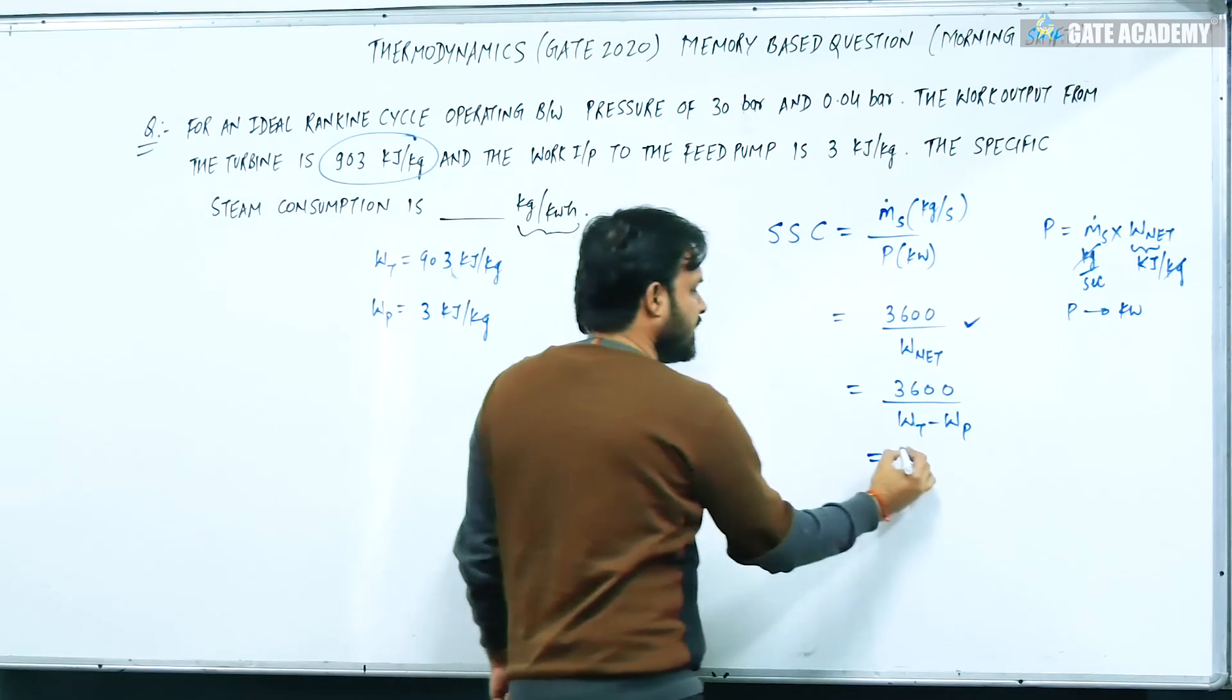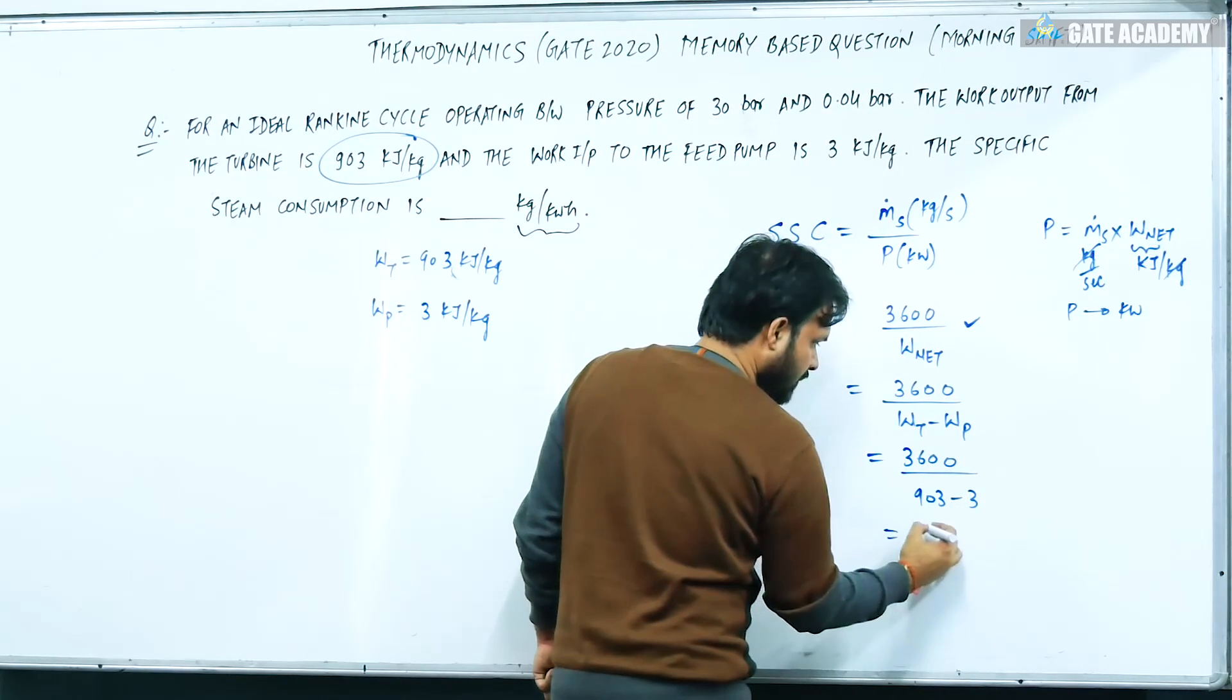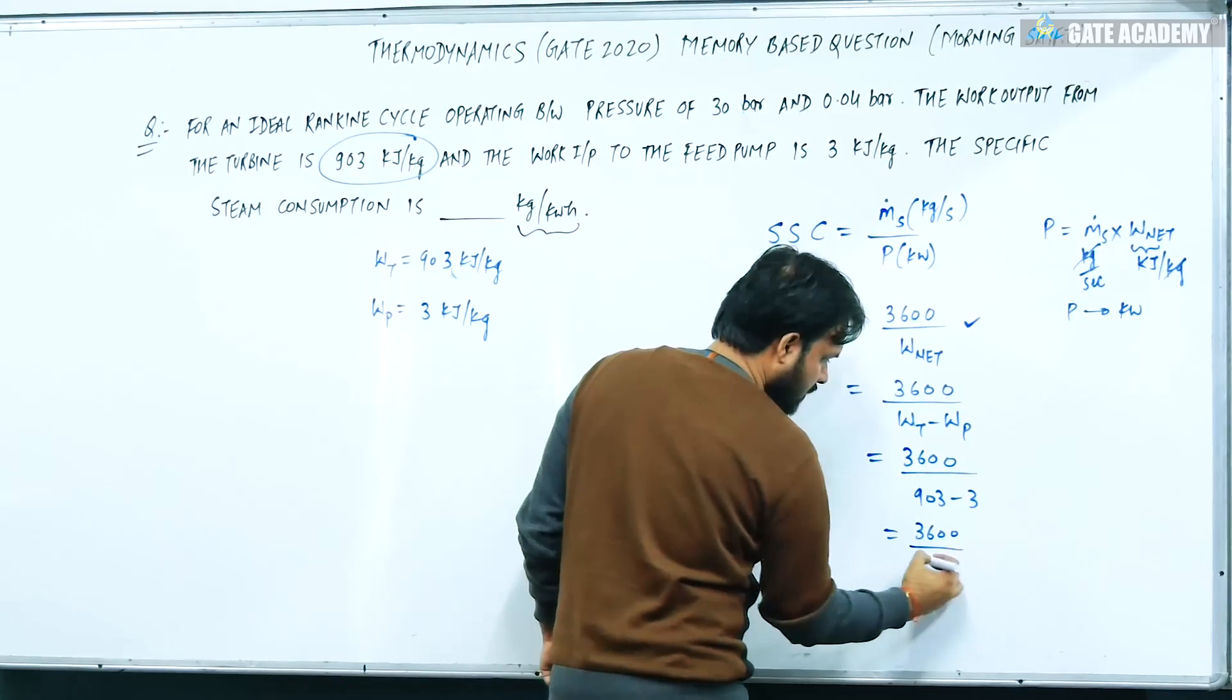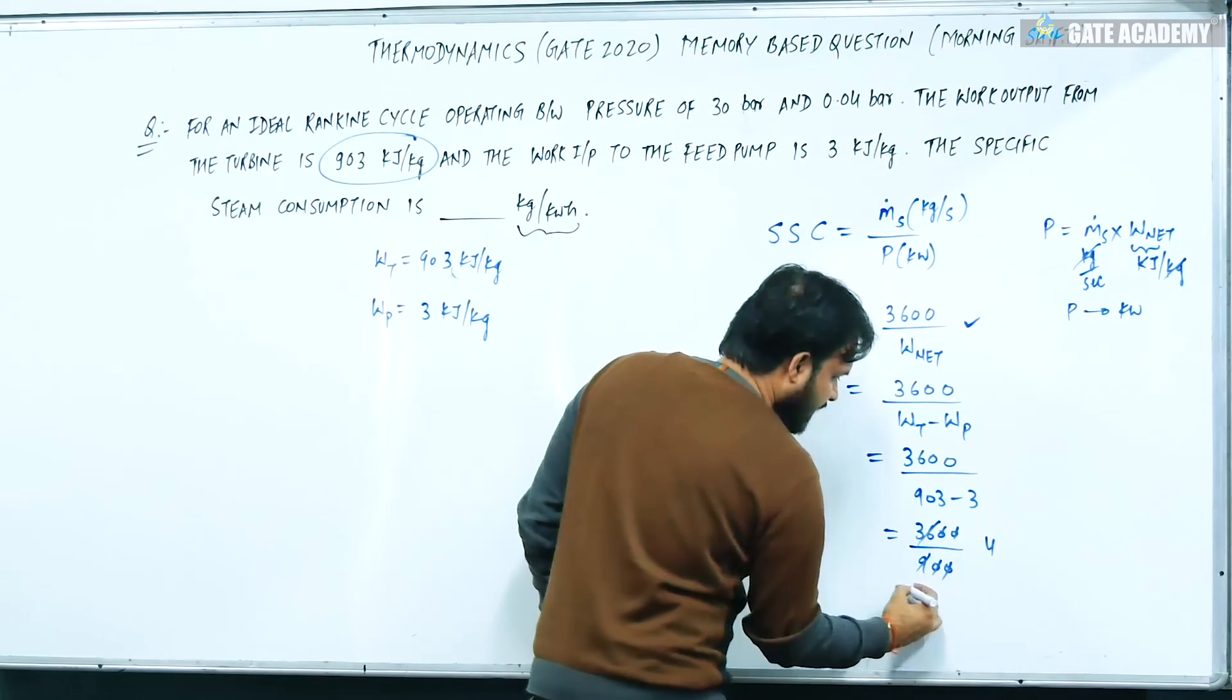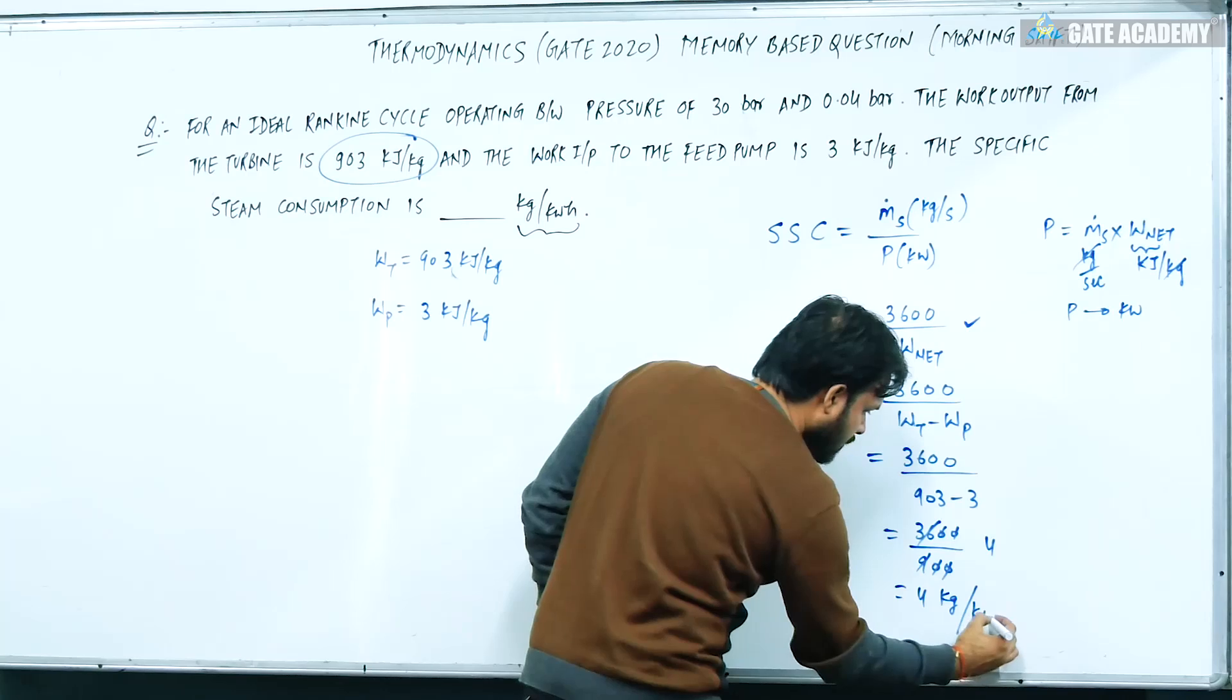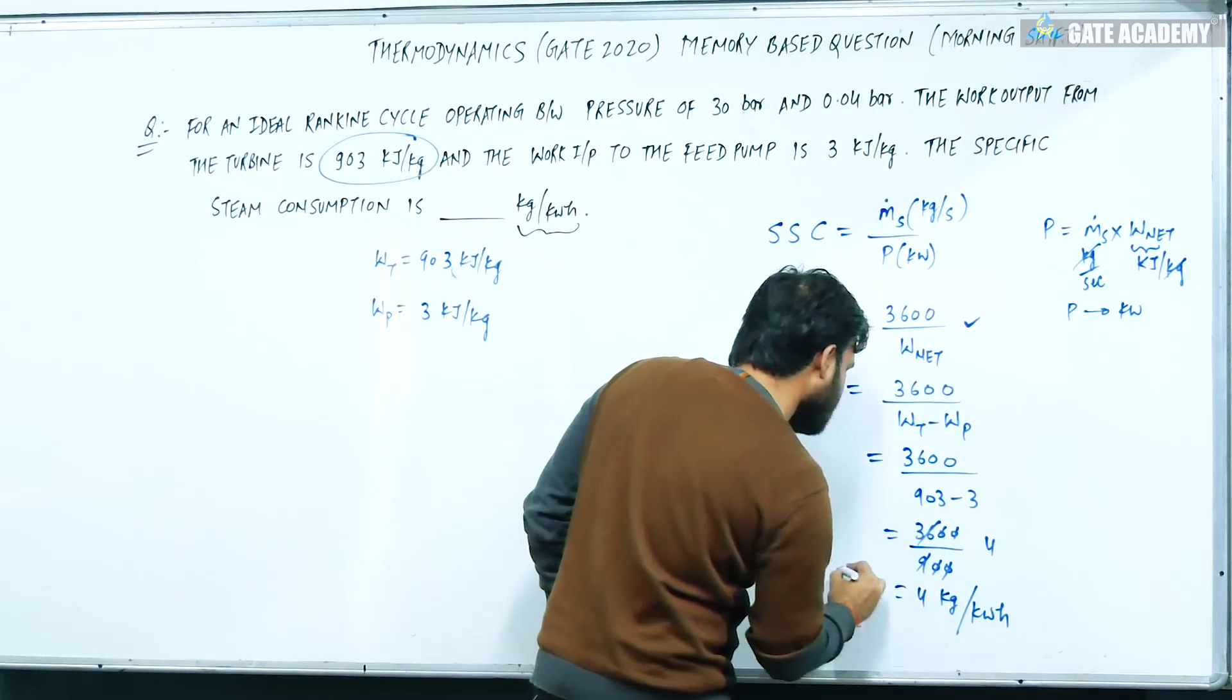So what will you find? 3600 upon 903 minus 3. This will be 3600 upon 900, and this will be 4 kilogram per kilowatt hour, which will be the specific steam consumption.